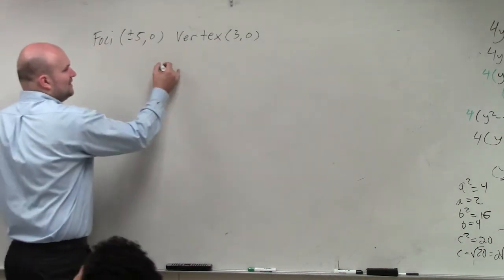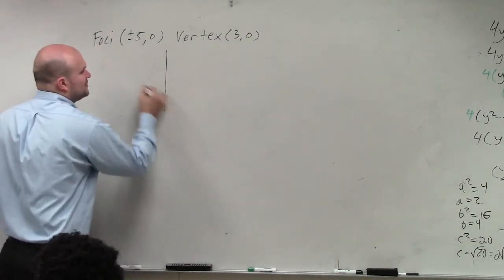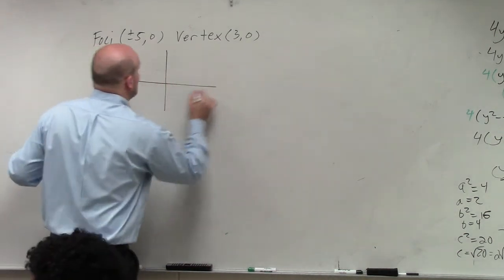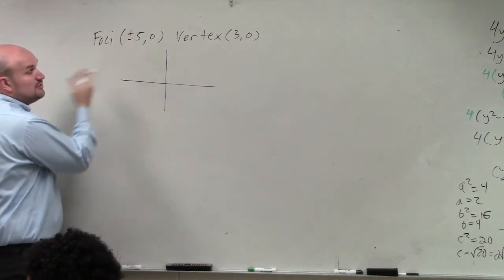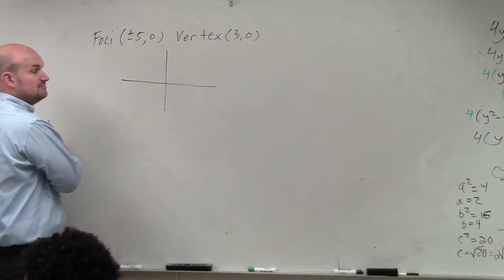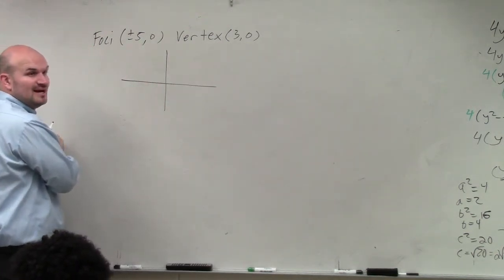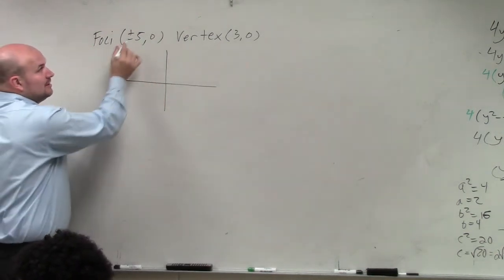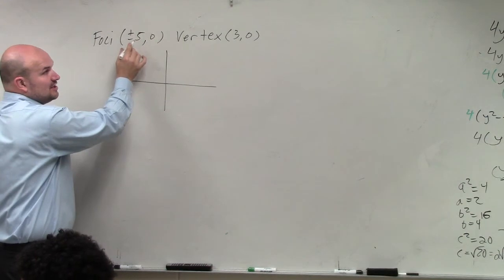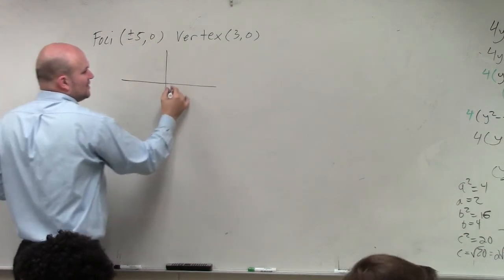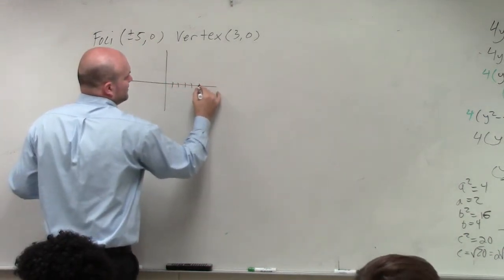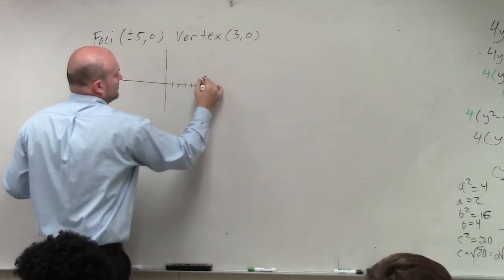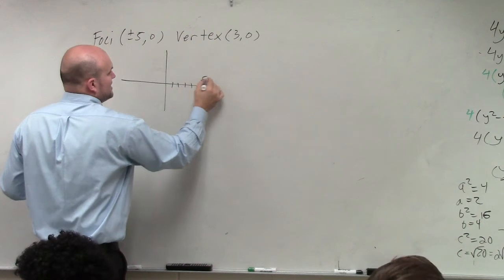Now, either way, the first thing you would do for any one of these problems is graph the information. So you have three points — graph them and label them. We have positive 5, 0 and negative 5, 0. Counting out to 5 on both sides, those are my foci.